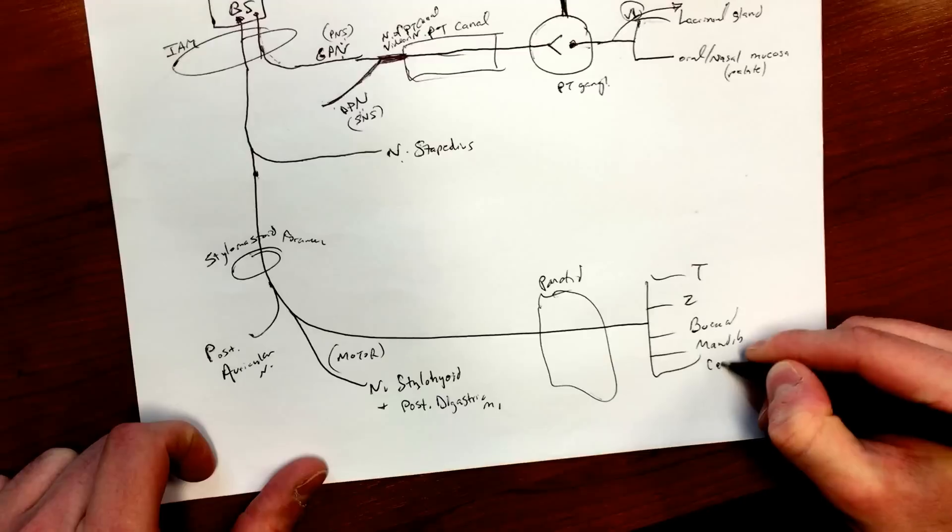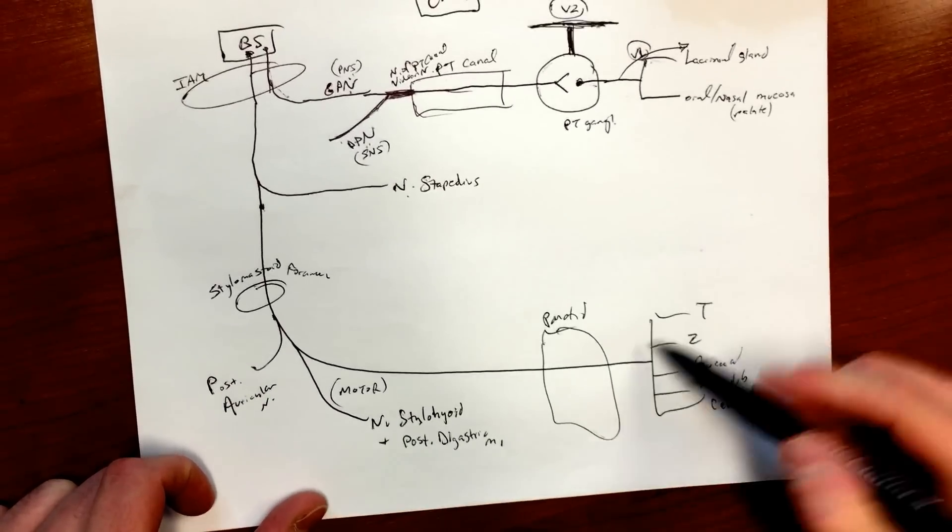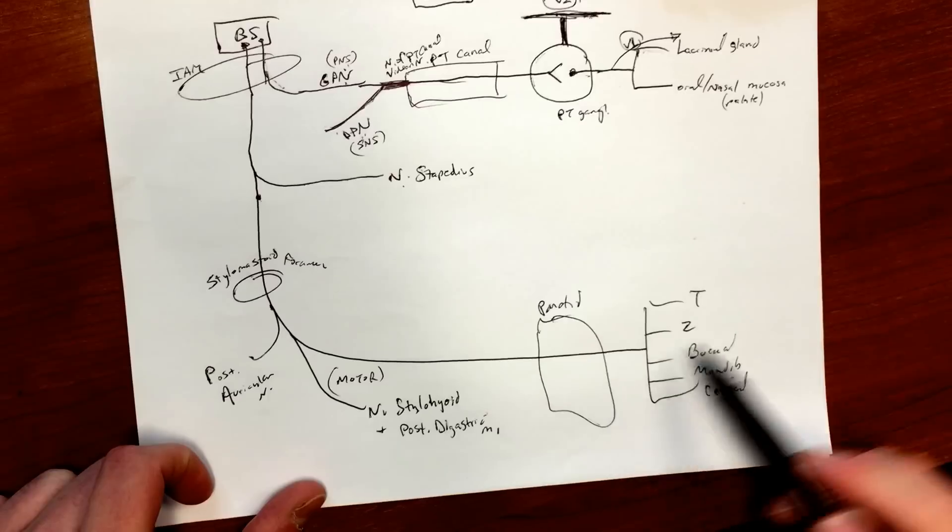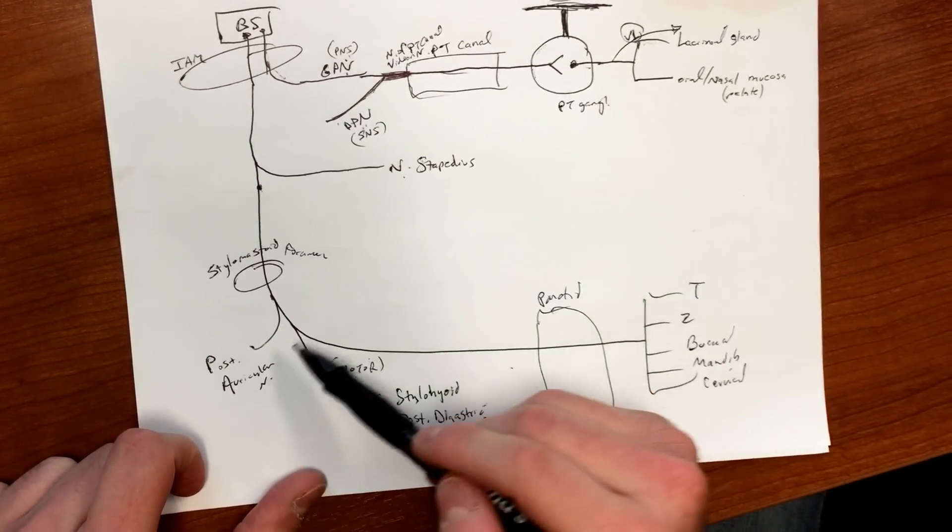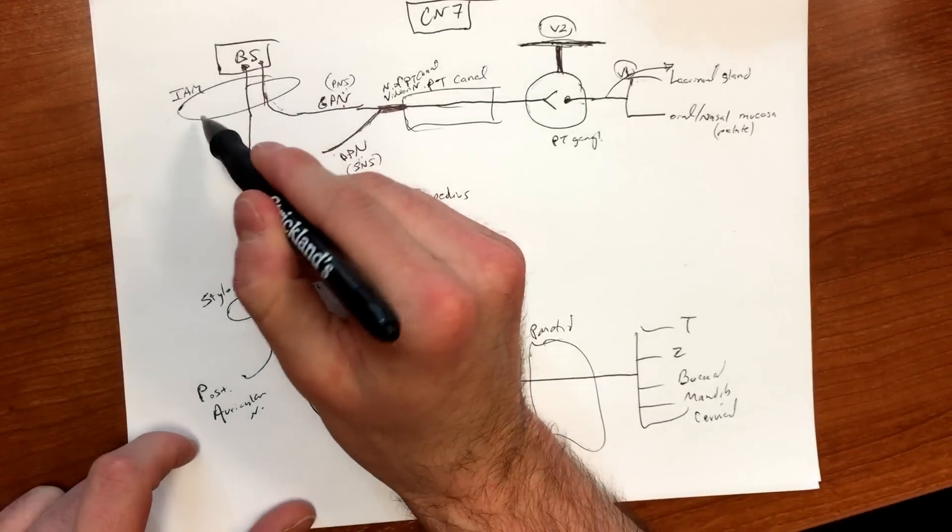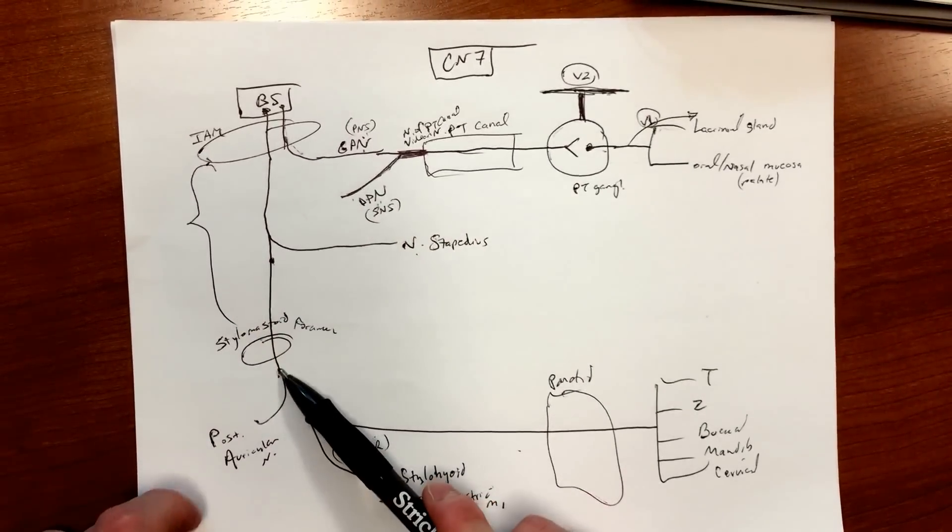And then you've got your five fingers to the face: temporal, zygomatic, buccal, mandibular, and cervical. Hopefully you've seen all these - these are all very high yield. So one thing to keep in mind here between internal auditory meatus and stylomastoid foramen - you guys know what that's called?